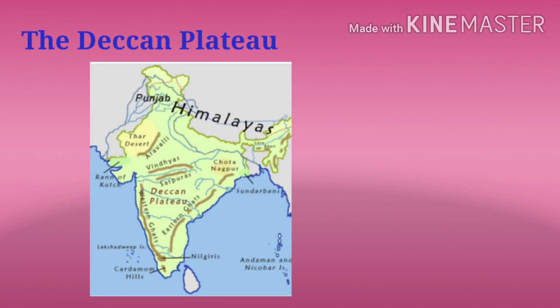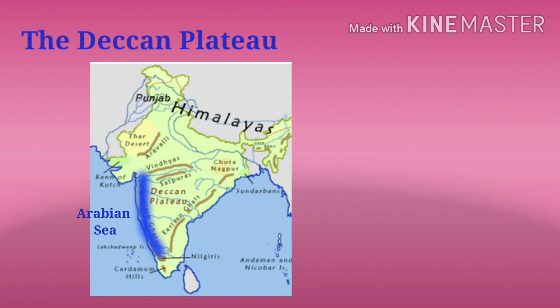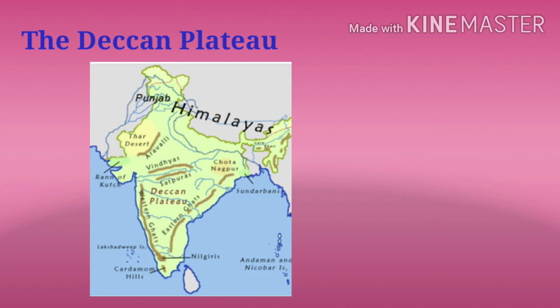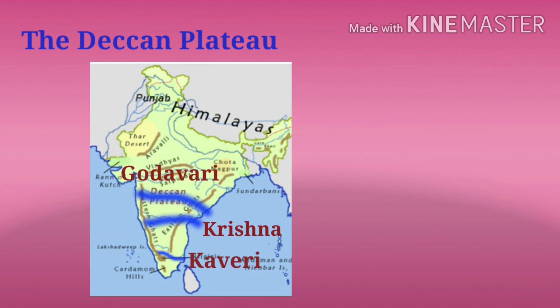The second one is the Deccan Plateau. This plateau lies in India. It is steeper and higher along the Arabian Sea in the west and slopes gently towards the Bay of Bengal in the east. A number of rivers flow across this plateau like Godavari, Krishna and Kaveri.